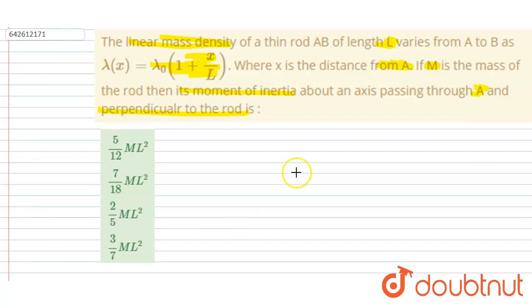So if I draw a rod like this, this is a rod. It is said that at a distance of X, at a distance of X, I took an element DX.